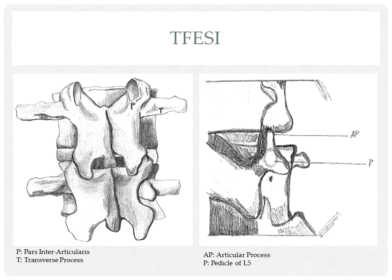The safe triangle is bounded medially by the nerve root, superiorly by the transverse process, and anteriorly by the vertebral body.